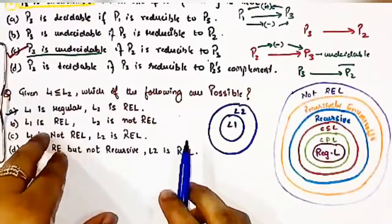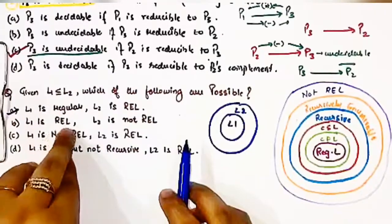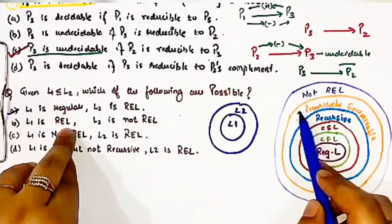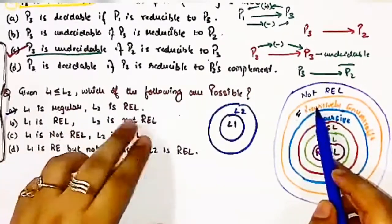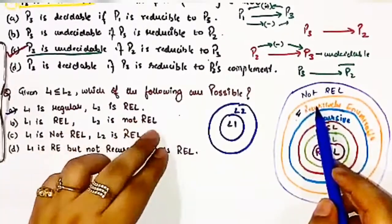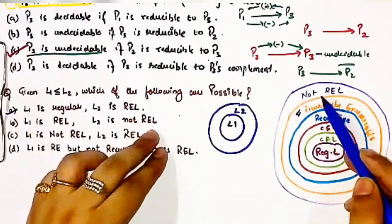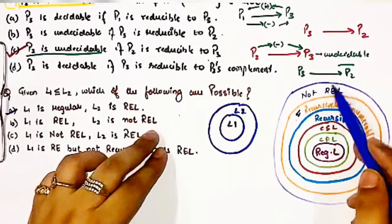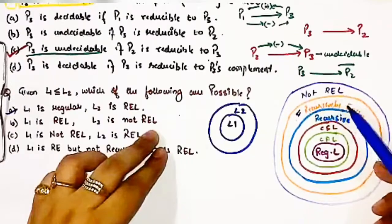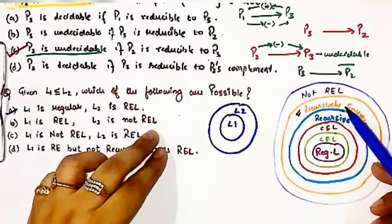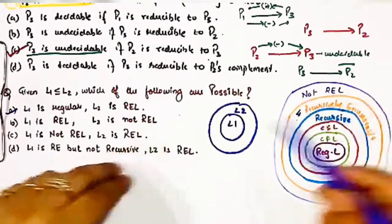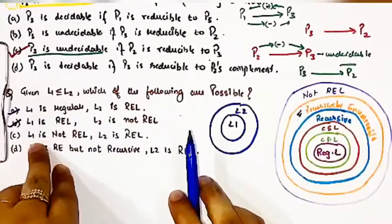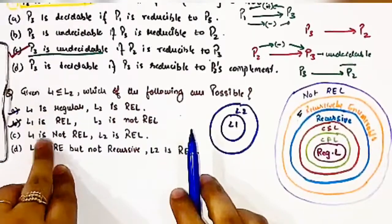The second option states that L1 is recursively enumerable and L2 is not recursively enumerable. This is also correct, because the set of not-recursively-enumerable languages is larger than the recursively enumerable set — so this is also a valid possibility.